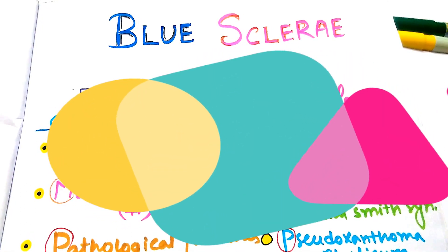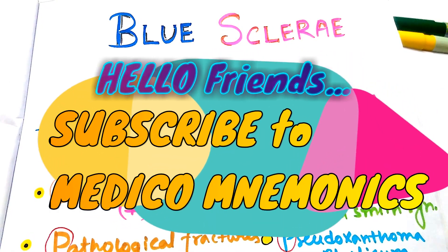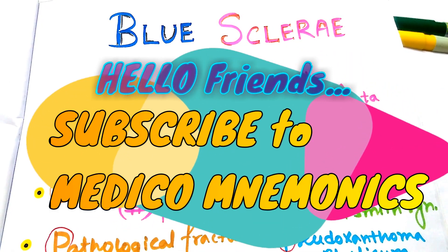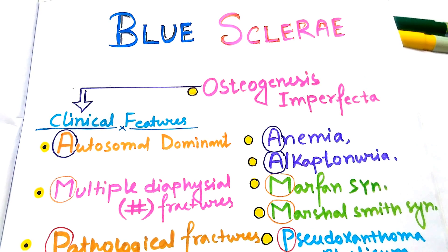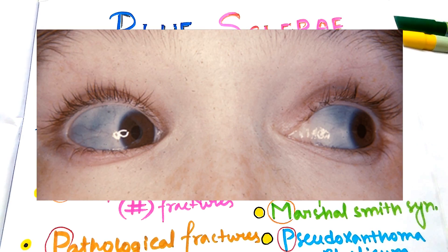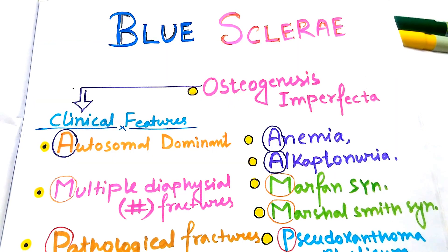Hello and welcome back friends. Due to exams there was no video in between, but today we have the mnemonic of causes of blue sclera, which is very interesting to know. The first and foremost disease we have to remember is osteogenesis imperfecta.